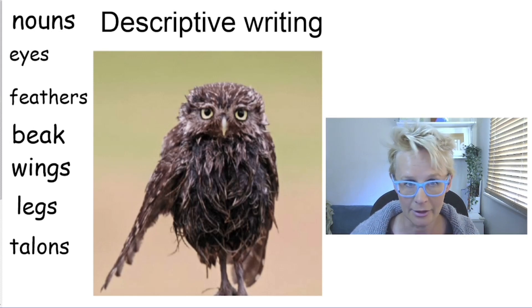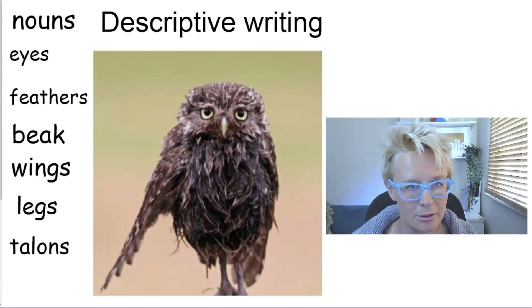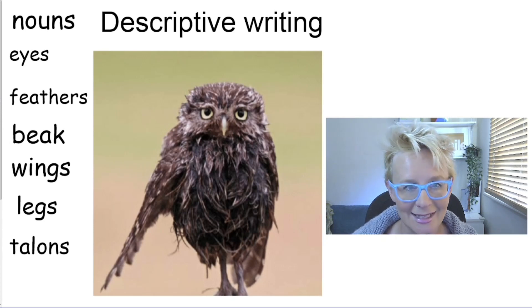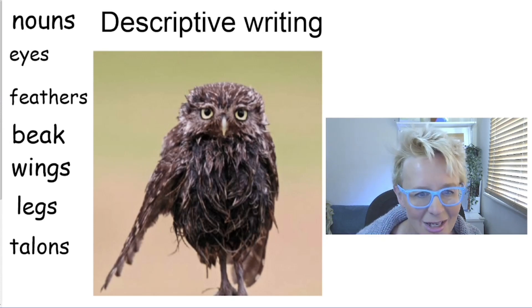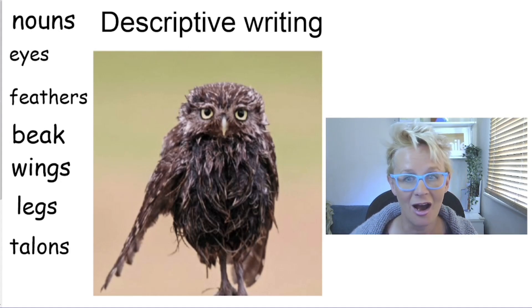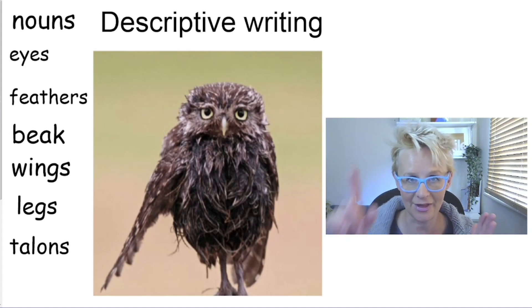Look at your object and pick out the nouns you can find. Looking at my owl, we've got: eyes, feathers, beak, wings, legs, and talons — we can't actually see the talons, but we know they're down there. These nouns are going to form the spine of our poem, just like we had with the cat.